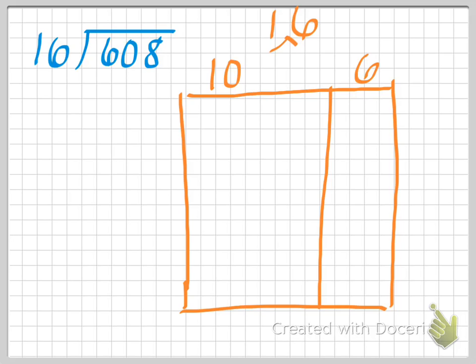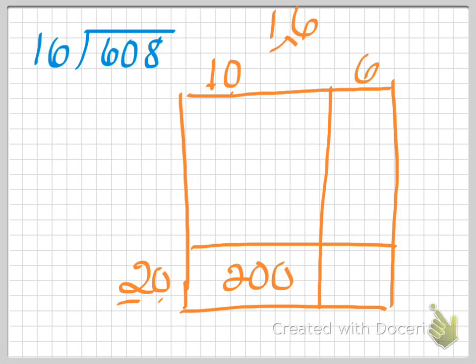So 10 and 6. 608 is a pretty big number, so I'm going to start with 20 this time instead of 10. 20 times 10 — that's 2 times 1 is 2, tack on the two zeros — that's 200. 20 times 6: 2 times 6 is 12, tack on the zero — that's 120. 200 plus 120 is 320. I'm almost halfway there. But if I did another 20, then 320 plus 320 would be 640 — that's too much. So let me add on 10 this time.